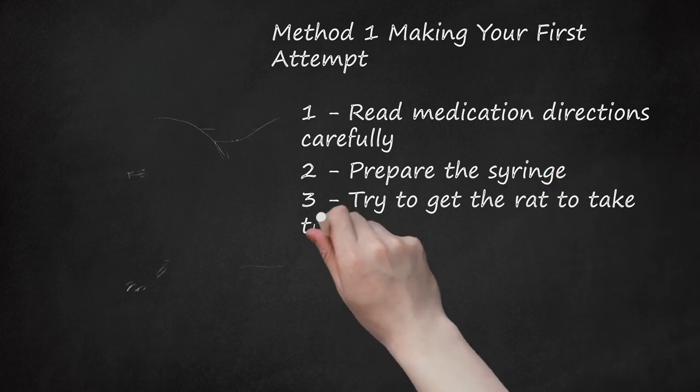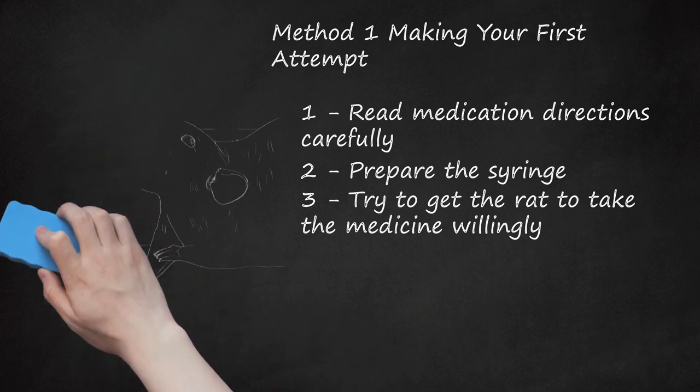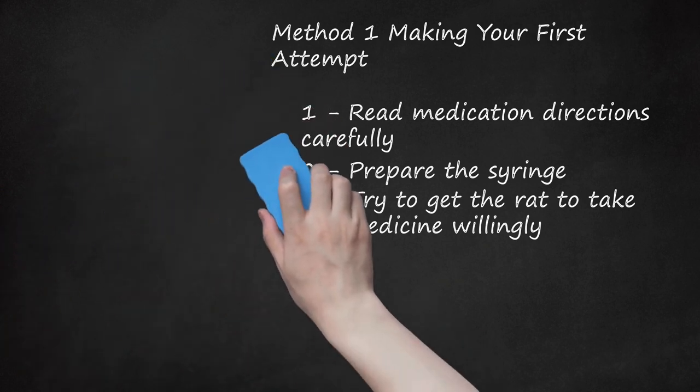3. Try to get the rat to take the medicine willingly. Rats may take medication, foods, or liquids administered by syringe willingly. Medications are often flavored and rats may actually enjoy the taste. You can simply allow your rat to lick the tip while slowly pressing down on the plunger. If your rat is willing to take the medication without being forced, this is the least stressful and most effective means to syringe feed him.